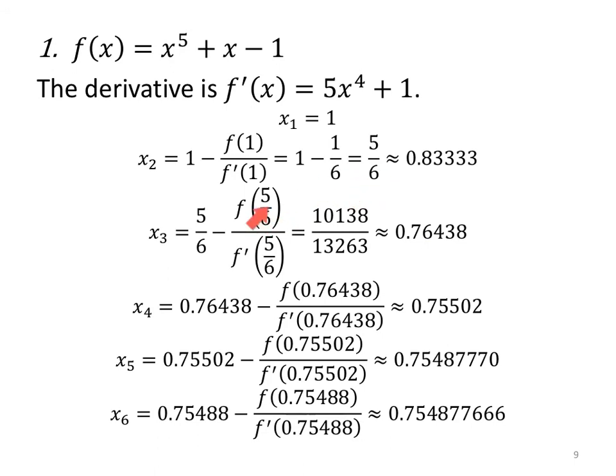Using our exact value of 5/6, I'm going to substitute 5/6 minus the function evaluated at 5/6 divided by the derivative at 5/6, which gives me 10138/13263 ≈ 0.76438. Using that decimal approximation, I use the full value on the calculator. I don't actually just round it, stop it here at the 38. I use the full value on the calculator to make my successive iterations more exact. x₄ = 0.75502. The next one, x₅ = 0.75487770.